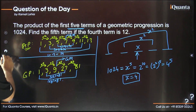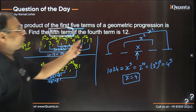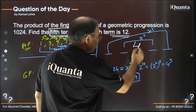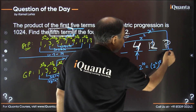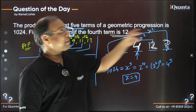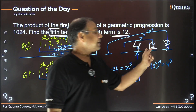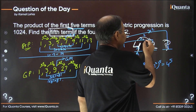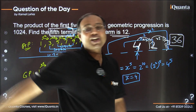Now, what is being asked and what is given? We need to find the fifth term. The fourth term is given as 12. We already found the third term is 4. The fourth term is 4 × 3 = 12, so the common ratio is 3. The fifth term is therefore 12 × 3 = 36. So 36 is the required answer.